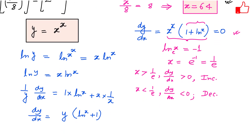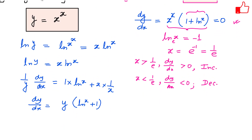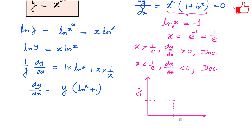Plotting the function y equals x raised to the power x, with the y-axis and x-axis shown, the function has a minimum at x equals 1 over e. The function first decreases toward this minimum and then increases after it, giving a U-shaped curve.